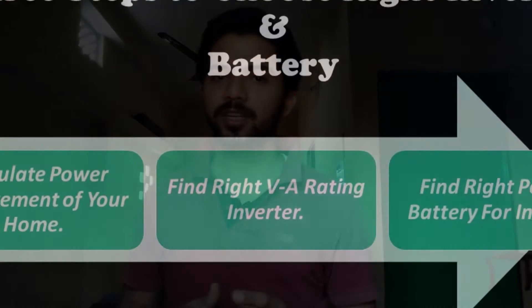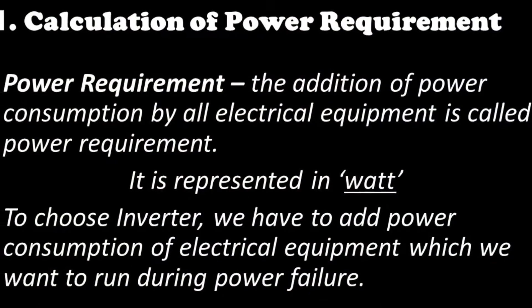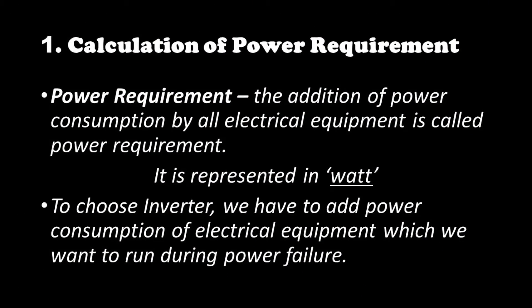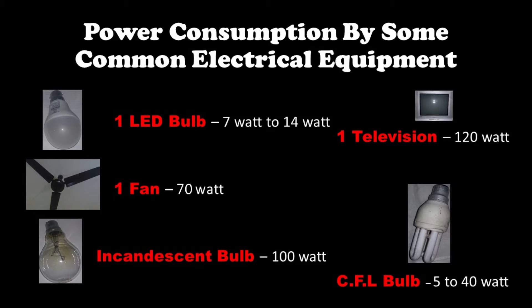First is to calculate your home power requirement. Second is to find the right VA rating inverter, and third is to find the right power battery for your inverter. Let's start with the first step in which we have to calculate the power requirement. Basically, the power requirement is the addition of power consumptions by all electrical equipment. As we are calculating for an inverter, we add power consumptions by all electrical equipment which we want to run during the power failure. Power requirement is always represented in watts.